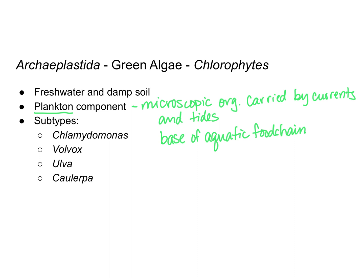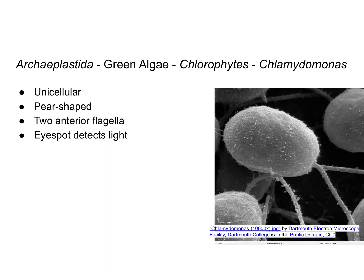There are four subtypes of chlorophytes: chlamydomonas, volvox, ulva, and caulerpa. The chlamydomonas are unicellular and pear-shaped — just a single cell. They have two flagella and an eyespot that can detect light, so they can actually swim towards light.